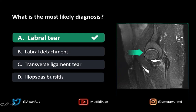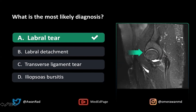The transverse ligament runs from the anterior labrum to the posterior labrum. Remember, the labrum is not a 360-degree structure as it is in the shoulder — it's 270 degrees. The transverse ligament is that last 90 degrees that bridges the anterior to the posterior labrum, but it's certainly not torn in this case. And this is not iliopsoas bursitis — that's just iatrogenic fluid or contrast from the actual injection.